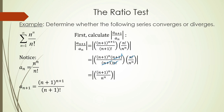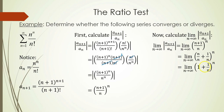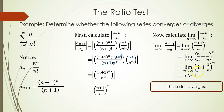For n equals 1 to infinity, we always have a positive quantity. Since both top and bottom are raised to the n power, we can rewrite this as the quantity n plus 1 over n, all to the n power. Taking the limit as n goes to infinity, I break up the fraction to get 1 plus 1 over n to the n power. Using L'Hôpital's rule, this has a value of e, which is approximately 2.718 and is greater than 1. Therefore, we conclude by the ratio test that the series diverges.